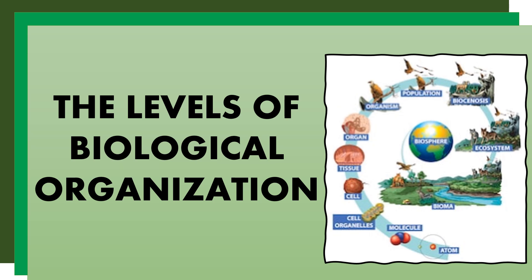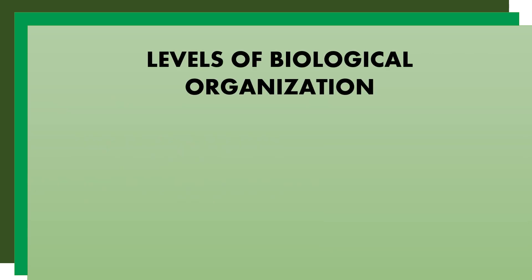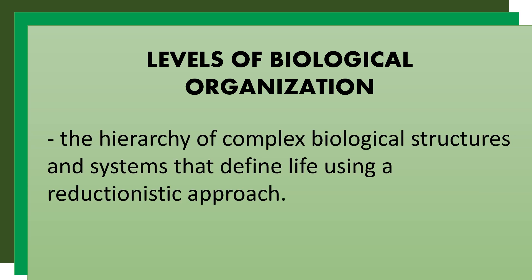Hello everyone and welcome again to our science class. Today, we will discuss the levels of biological organization, which is the hierarchy of complex biological structures and systems that define life using a reductionistic approach. Every species on earth evolved from the simplest to complex form — from single cell to complex and multicellular bodies. This lesson will also help you understand how important each living organism is, and how important it is to preserve the ecosystem.